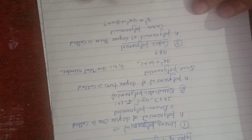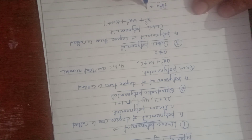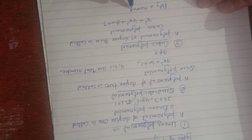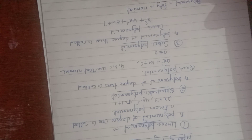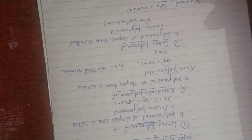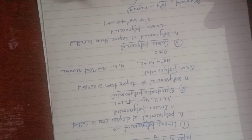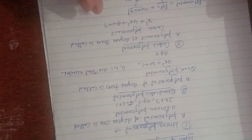Let us look at the word 'polynomial.' It is made of two words: 'poly' and 'nomial.' Poly means many, and nomial means terms. So polynomial means many terms.